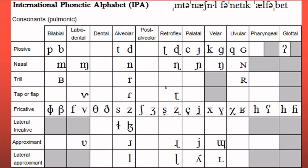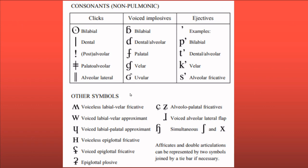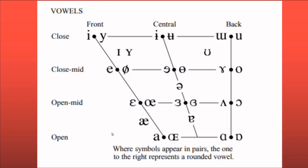The IPA we use for English has 44 phonemes chosen from this much larger list. These are only the pulmonic consonants — there are also non-pulmonic sounds and many other symbols. There are also all the vowels that are possible across different languages, of which we have chosen 12 for English.